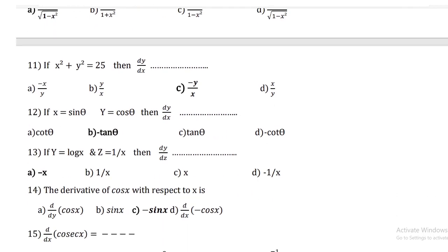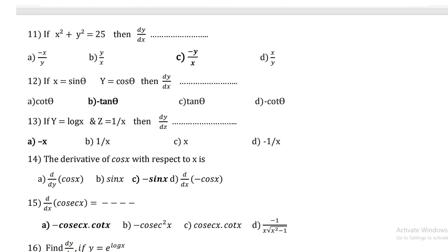If x² + y² = 25, then dy/dx = −y/x. If x = sin θ and y = cos θ, then dy/dx = −tan θ. If y = log x and z = 1/x, then dy/dz = −x. The derivative of cos x with respect to x is −sin x.